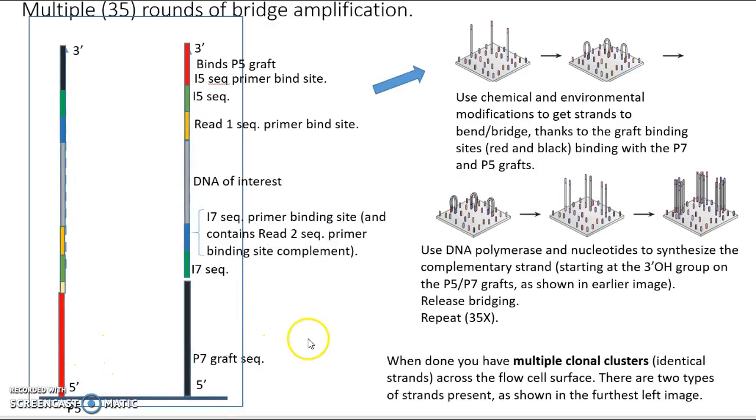All right. So what we're going to do then are 35 rounds of bridge amplification. So here are the single strands that we just looked at in the slide before. And these are the various sequences. I've labeled some of them, but not all of them over here so that you can relate this image to the one that we looked at earlier when we were talking about library preparation. And this is a simplified cartoon that shows the process of going from a few to many. And these are what are called clonal clusters. So here are our single strands just like this and this.